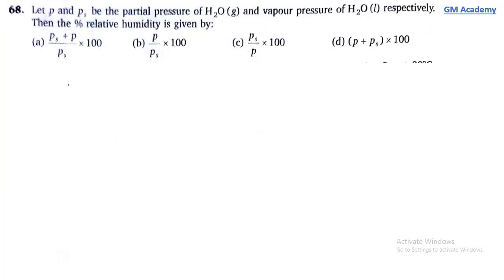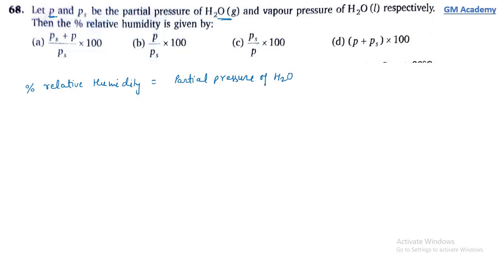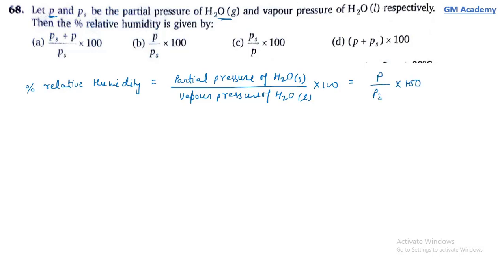Question 68: Let P be the partial pressure of H₂O gas and Ps be the vapor pressure of H₂O liquid. Percentage relative humidity = (P/Ps) × 100. This matches option B.